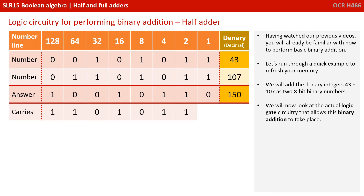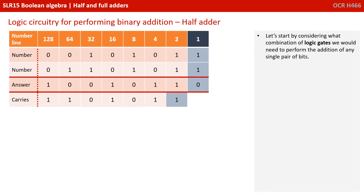We'll now look at the actual logic gate circuitry that allows this binary addition to take place. Let's start by considering what combination of logic gates we would need to perform the addition of any single pair of bits.